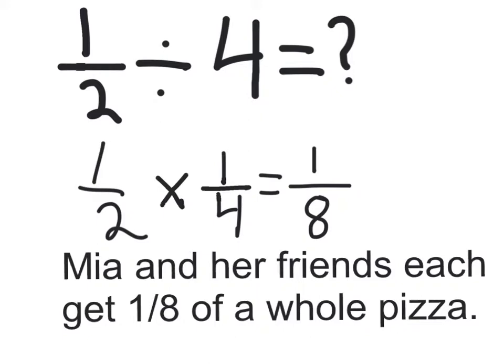So, the equation for the problem will be one half divided by four. It will be this because it's half of a pizza divided by Mia plus her three friends. One plus three is four.